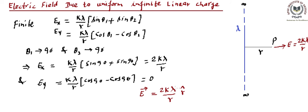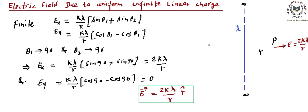The vector form is E = (2k lambda / r) r-hat. If lambda is positive, the field points in the positive r-hat direction. If lambda is negative, there will be a minus sign, meaning the field points in the minus r-hat direction — that is, towards the linear charge distribution. This is an important result. So this is the final field due to a uniform infinite linear charge.